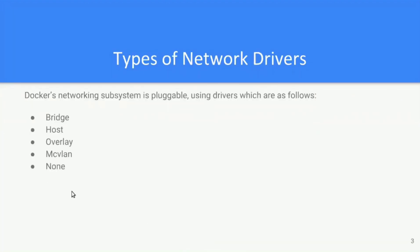Let's discuss the various types of network drivers. First is bridge. Bridge is the default network driver. If you haven't specified any driver, then by default the container uses the bridge network driver. It is used when you want multiple Docker containers within the same Docker host to communicate with each other.